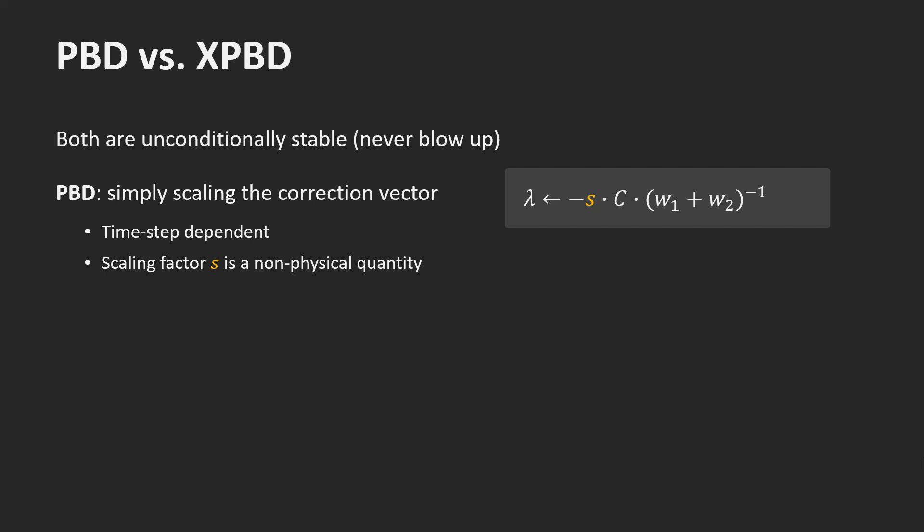This is a good point to explain the difference between position-based dynamics PBD and the extended version xPBD. Both are unconditionally stable, which means they never blow up. The difference is subtle. It is a simple modification of the formula to compute lambda. The two methods differ in how to handle soft constraints. PBD uses a scalar s between 0 and 1 and simply scales the constraint updates to make a constraint soft. This parameter is quite easy to tune. 1 means infinite stiffness and 0 disables the constraint.